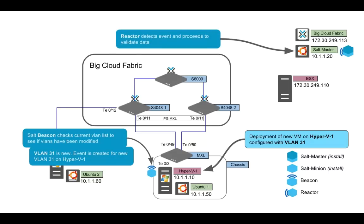The event contains two pieces of information: the MAC address of the Hyper-V server, and the VLANs that need to be added or removed. When the event gets to the master, I have a reactor watching for that particular event. Once it detects it, it validates the information — it sees the MAC address for Hyper-V1 and the VLAN that needs to be there. You can do a check in your organization to say this VLAN number range can be managed by that Hyper-V server, allowing you to segregate departments to manage certain subsets of VLANs.